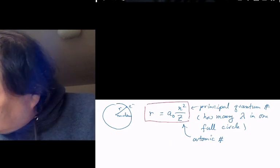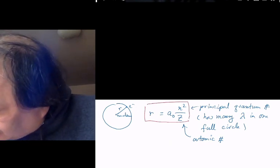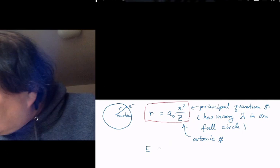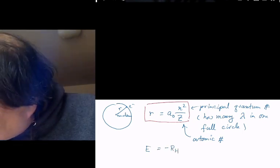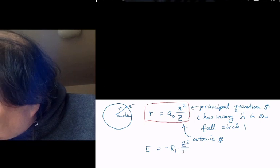Another formula that stood the test of time is the energy of the electron. Electrons are negative in atoms: minus RH z squared over n squared, the same two variables.